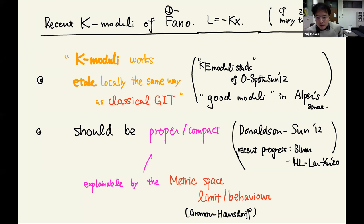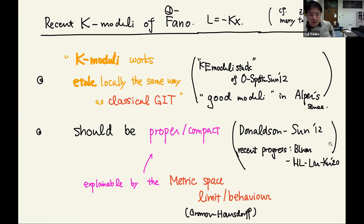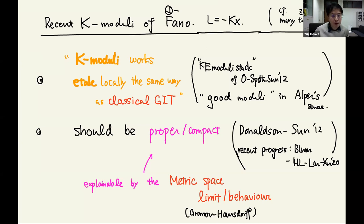As algebraic geometers we want an algebraic proof, which is not done yet in general. There is recent very good progress in a paper reducing properness to some finite generation condition at the level of delta-minimization. At least conjecturally, we can expect properness. That's a very good thing in the Q-Fano anti-canonically polarized case, but it's not true in general — that's what I want to say.